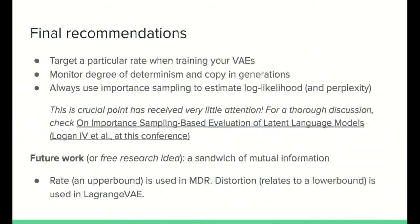To wrap up, our final recommendations are: do target a particular rate — it's a single directly interpretable hyperparameter and integrates easily with more complex VAEs; you can use MDR or 3Bits for that. Monitor for determinism in the generator, as this typically indicates collapse. And look for copying behavior, which indicates overfitting. Always use importance sampling to estimate log likelihood and perplexity. Estimates of held-out perplexity are noisy and biased; importance sampling helps reduce both noise and bias, leading to cleaner conclusions. This is a crucial point that has received very little attention. At this conference you will find another paper by Logan et al. on importance sampling-based evaluation of related language models, and I really recommend you check that out.